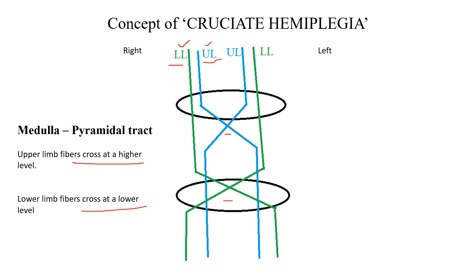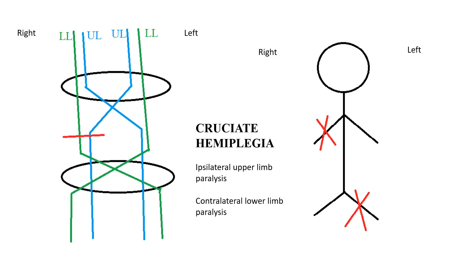This is the concept behind cruciate hemiplegia. Cruciate hemiplegia occurs whenever the lesion occurs after the crossing of upper limb fibers but before the crossing of lower limb fibers. At that point, the upper limb fibers have crossed but the lower limb fibers have not yet crossed.